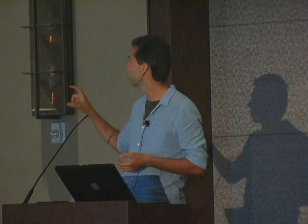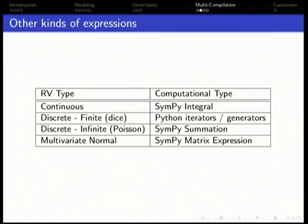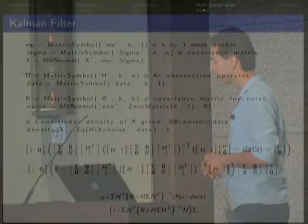There are various types of random variables in SymPy Stats or in development in SymPy Stats. Continuous random variables generate integrals. Random variables like dice or coins generate Python generators. Discrete infinite variables like Poisson should generate summations. We don't have that built yet, but all the machinery is there. I want to give an example in multivariate normal random variables, because that's a very common example. Those generate SymPy matrix expressions. The next example is very experimental. It's in a development branch. Don't use it, but it's fun.